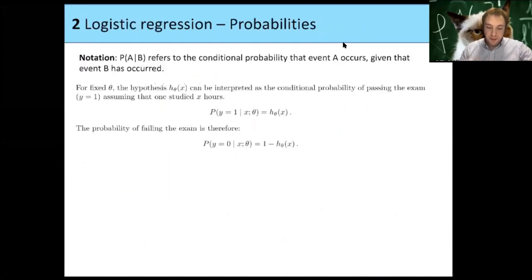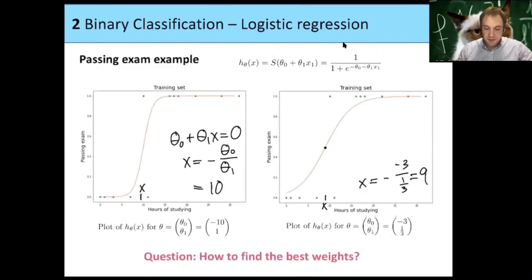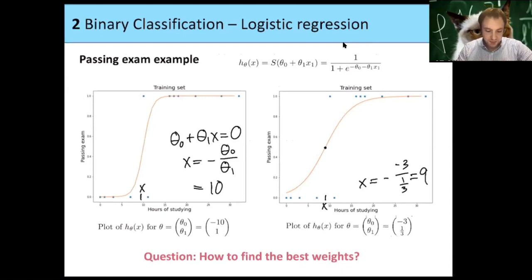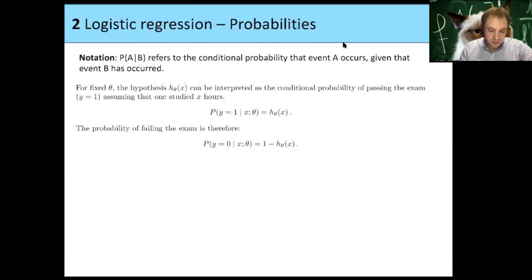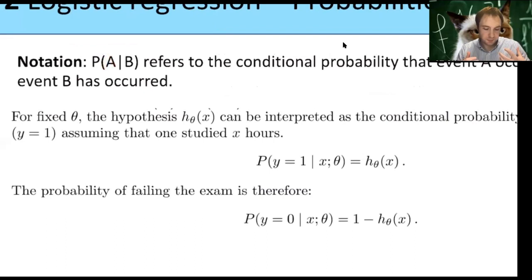How do we find the best weights? We note that the values of our hypothesis will be between 0 and 1, so we can think of them as probabilities. The orange curve describes the probability of passing the exam after studying a certain number of hours. In probability theory, we use the notation P(A|B), the conditional probability that event A occurs given event B. In our example, A is passing the exam and B is having studied, say, 10 hours.